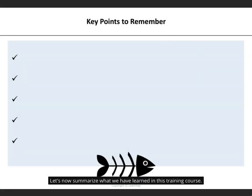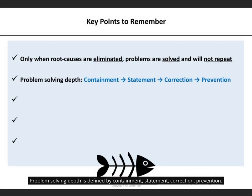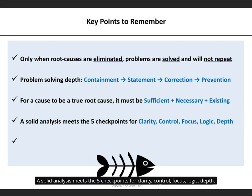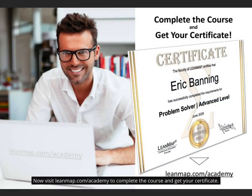Let's summarize what we have learned in this training course. Only when root causes are eliminated, problems are solved and will not repeat. Problem-solving depth is defined by containment, statement, correction, and prevention. An existing cause must be sufficient and necessary to be called a root cause. A solid analysis meets the five checkpoints for clarity, control, focus, logic, and depth. Use the PDCA checklist to measure solution effectiveness — strive for 20 points or 100%. Now visit leanmap.com/academy to complete the course and get your certificate.